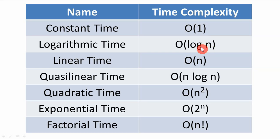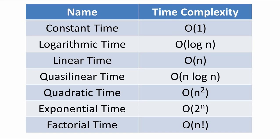If the number of operations depends upon the value of n or the number of data items, then it could be logarithmic, linear, quasi-linear, quadratic, exponential, or factorial time complexity — because in all these, complexity depends upon the value of n. I have arranged all the time complexities in decreasing order of efficiency, meaning as the number of steps increases, efficiency decreases.